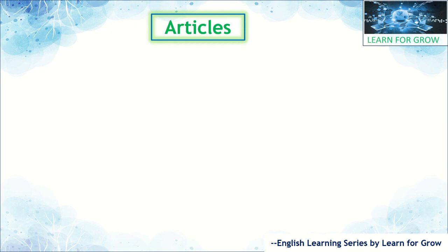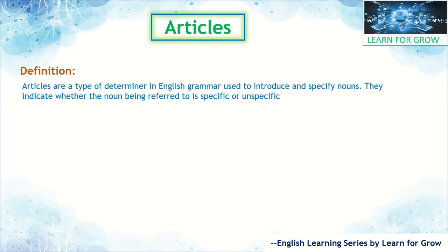Let's see the first definition of the article. Articles are a type of determiner in English grammar, used to introduce and specify nouns. They indicate whether the noun being referred to is specific or unspecific. That's the simple definition of an article — it is a determiner in English grammar that introduces or specifies a noun.